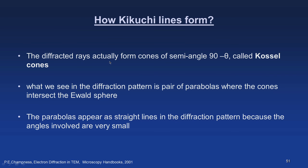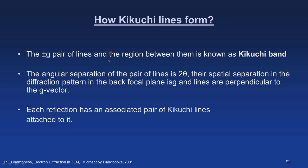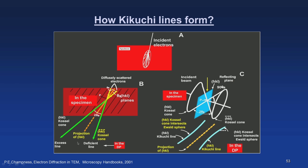The diffracted rays form cones of semi-angle 90 minus theta, called Kossel cones. What we see in the diffraction pattern is a pair of parabolas where the cones intersect the Ewald sphere. The parabolas appear as straight lines because the angles involved are very small. The plus or minus G pair of lines and the region between them is known as a Kikuchi band. The angular separation of the pair is 2θ; their spatial separation in the back focal plane is G, and the lines are perpendicular to the G vector. Each reflection has an associated pair of Kikuchi lines.